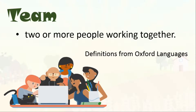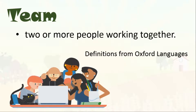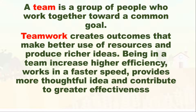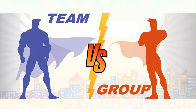So what is a team? According to Oxford Languages, a team is composed of two or more people working together. A team is a group of people who work together towards a common goal. Teamwork creates outcomes that make better use of resources and produce richer ideas. Being in a team increases efficiency, works at a faster speed, provides more thoughtful ideas, and contributes to greater effectiveness. A team is defined by its composition, culture, and goals — made up of people with complementary skills who share a common goal. Now, can you write on a piece of paper the difference between a team and a group, based on your understanding?